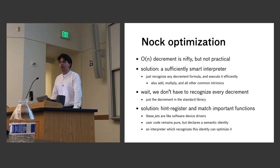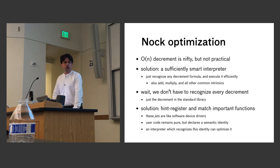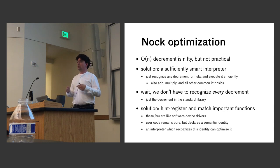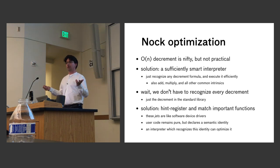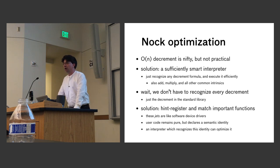That brings up a problem: if you try to boot Urbit with a completely naive interpreter, it will immediately start decrementing and keep decrementing until the end of time. There's a well-known solution called the Sufficiently Smart Interpreter — your interpreter analyzes the algorithm, recognizes it's a decrement, and implements it efficiently. We also need to recognize add, multiply, and other interesting functions. Fortunately, we don't have to recognize every decrement, just the one we actually call — the one in the standard library.